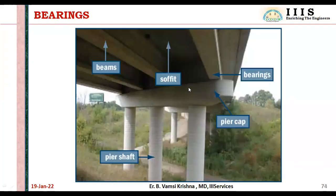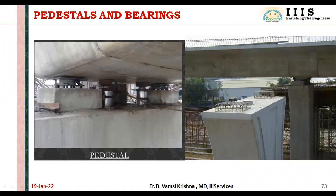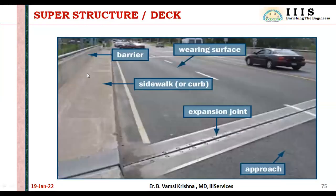Bearings are provided over pedestals. Going deeper, there are different types of bearings: elastomeric bearings and pod bearings. Elastomeric bearings are made of rubber — hard rubber material. Pod bearings are metallic. In the picture shown, these are metal bearings. In flyovers in Hyderabad, you can observe elastomeric bearings made of hard rubber when you pass under any flyover.